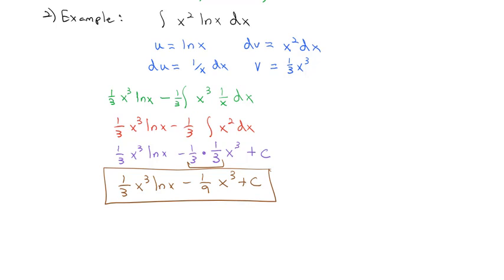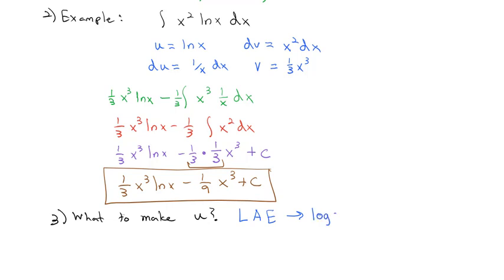This process first takes a little bit to memorize the formula — u times v minus the integral of v du. But the process really comes down to making the correct decision about what to make the u. Why did we make natural log of x the u instead of x squared? Well, usually there's one factor that makes a better u than the other. The way we remember which factor is better is the acronym LAY, which means whichever comes first becomes the u: whether it's Logs, Algebra, or Exponents.